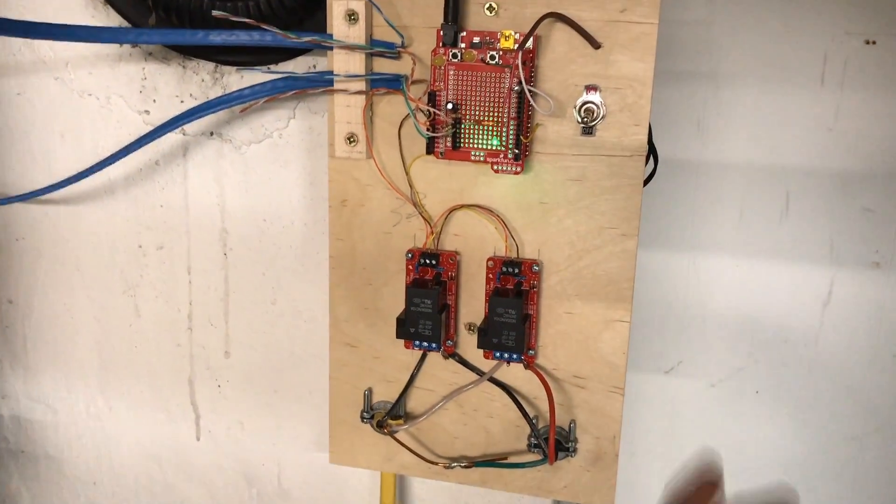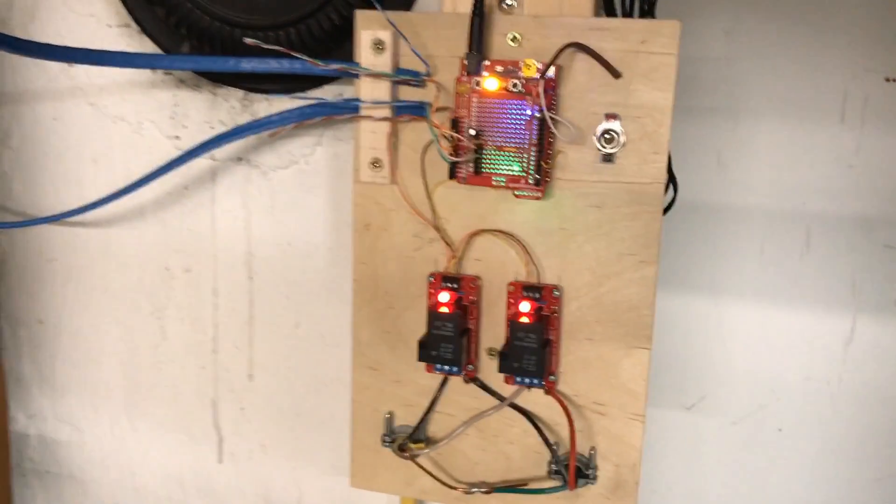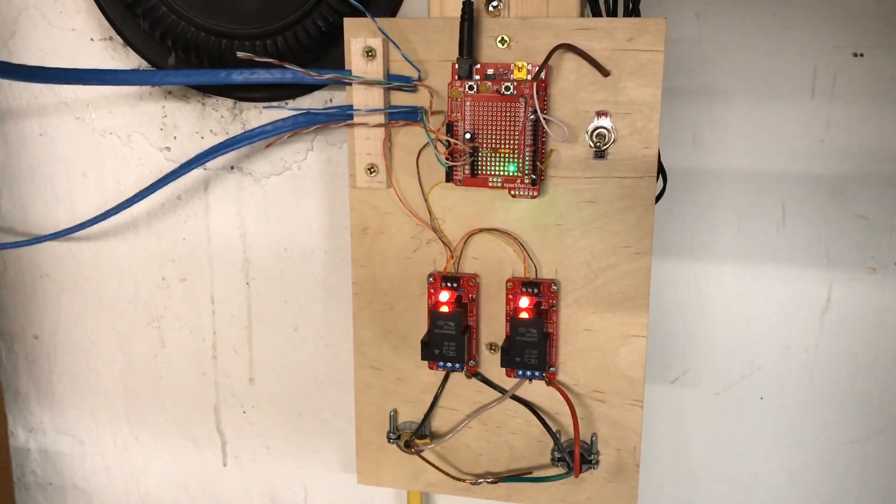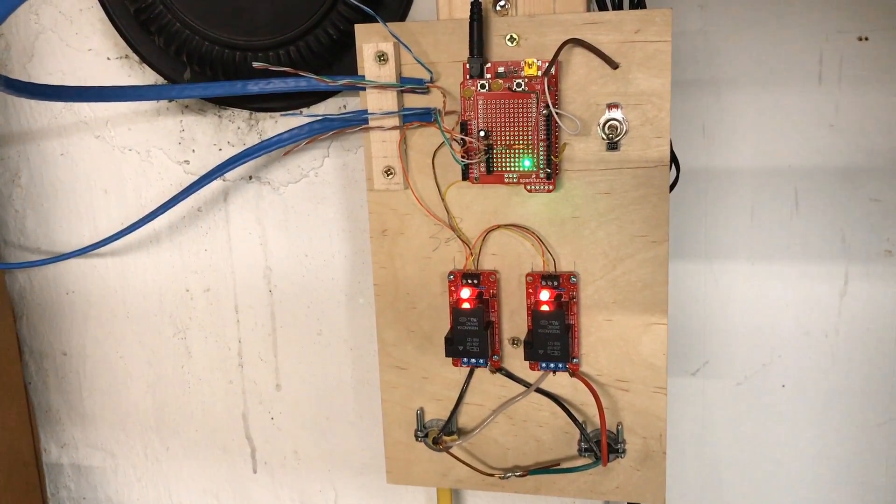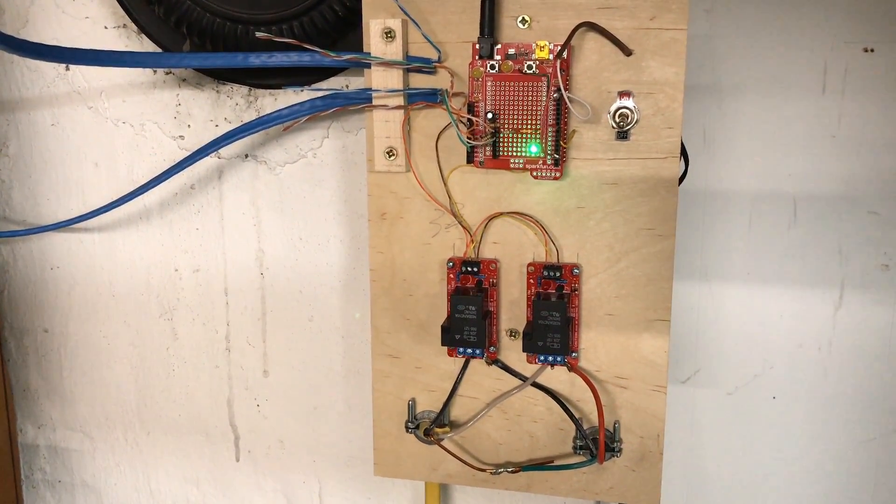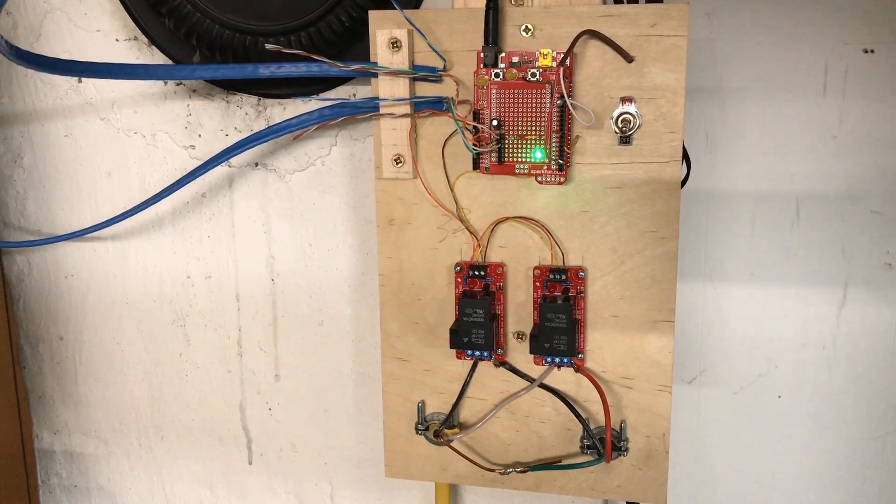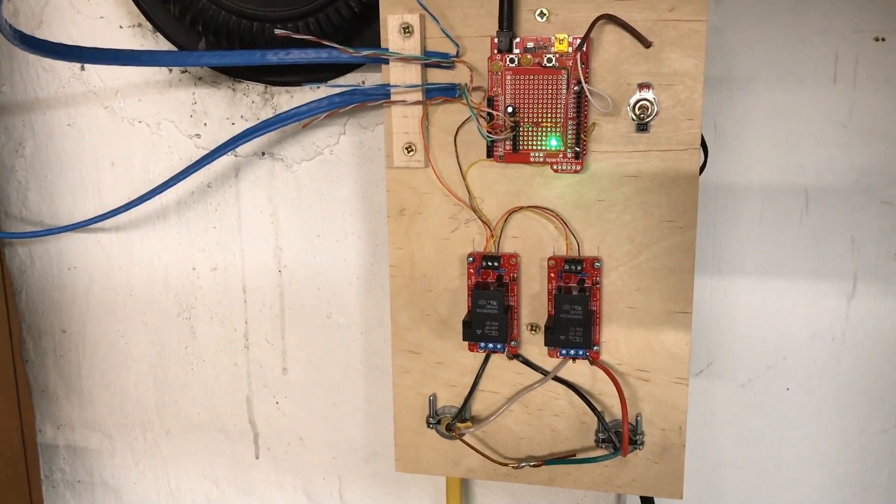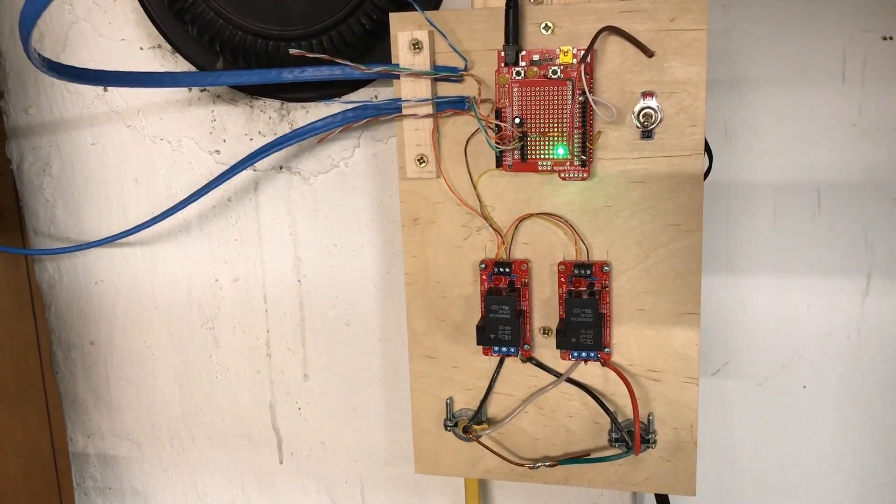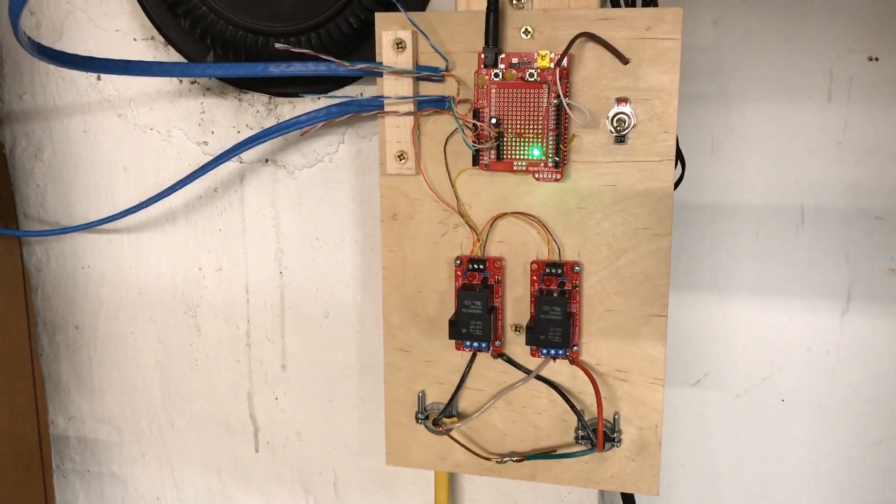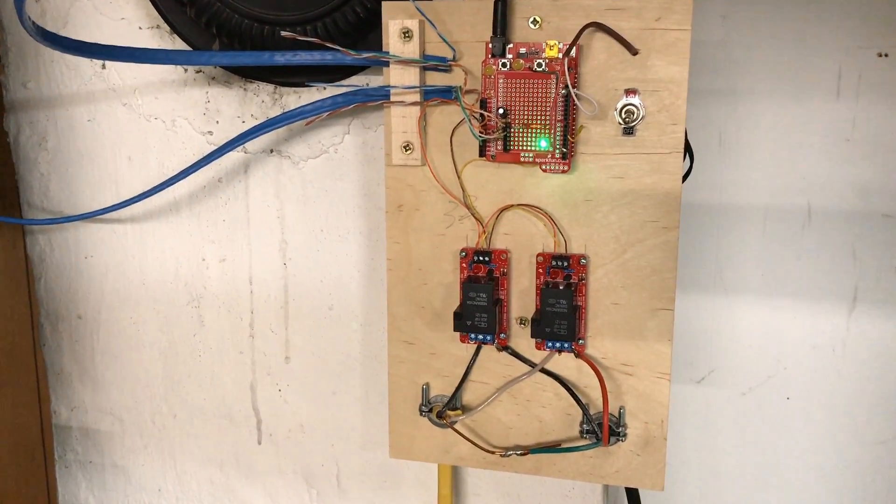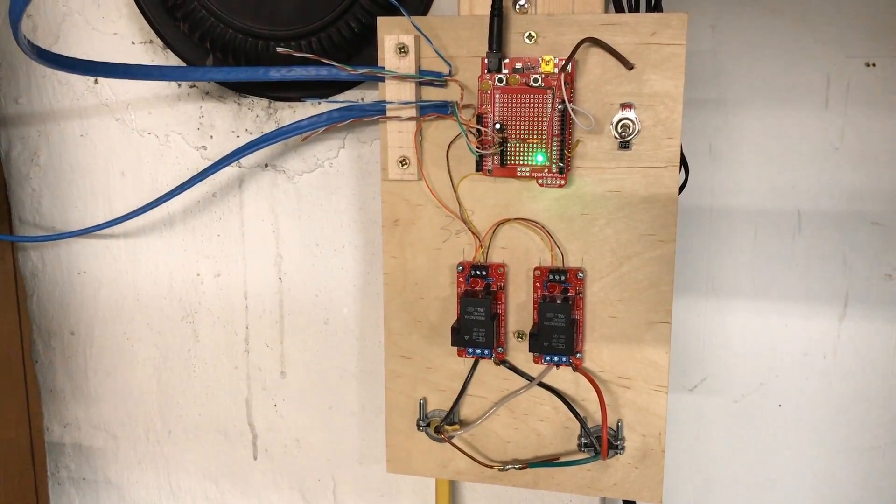So just for example, if I go ahead and flip this on now. So you can see there that when I turn the switch on, the relays flipped over, the dust collector kicked on, and as soon as I turn it off, it turns off.